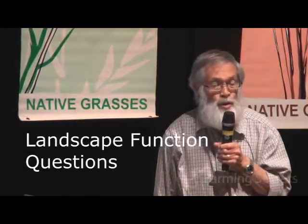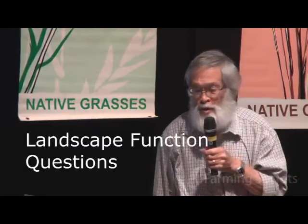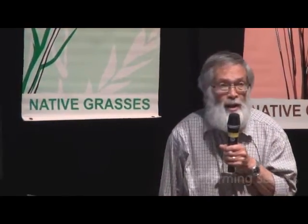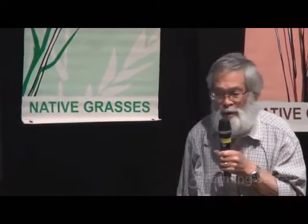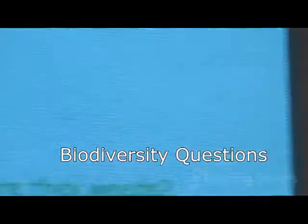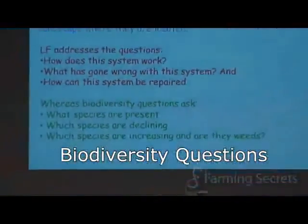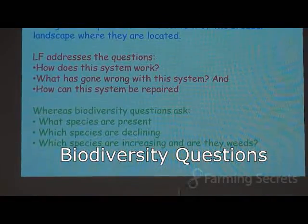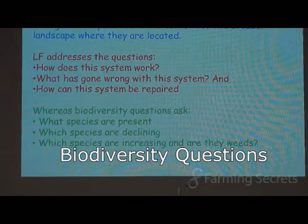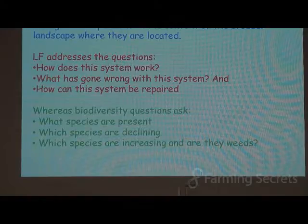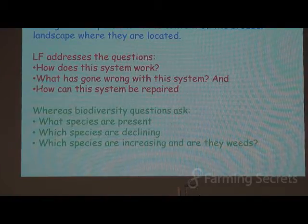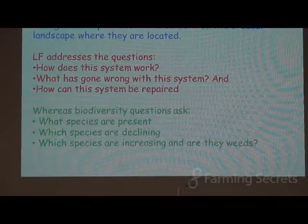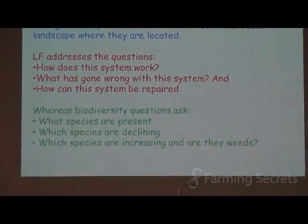What's gone wrong with this system with respect to stresses and disturbances? And how can that system be repaired if we want to make better use of that landscape in the future? Biodiversity questions are more like: what species are present, what species are declining or under threat, and are some species increasing and are they weeds? You can see that the questions are entirely different, but in my view we need to be addressing both sets of questions at the same time in order to achieve a wiser management outcome.